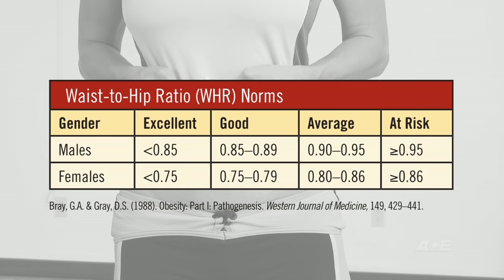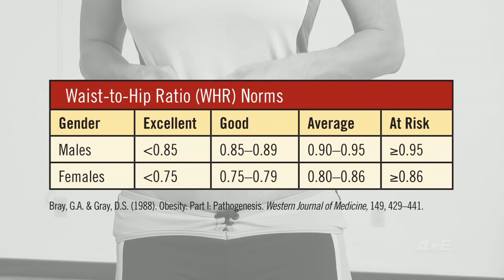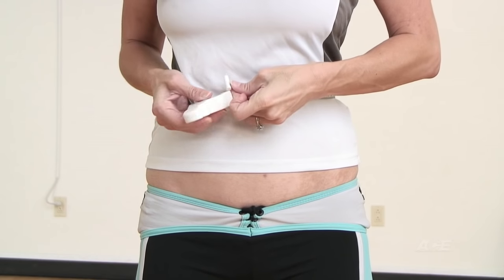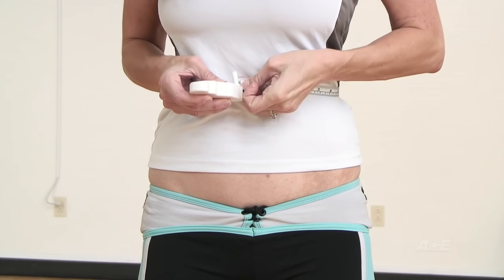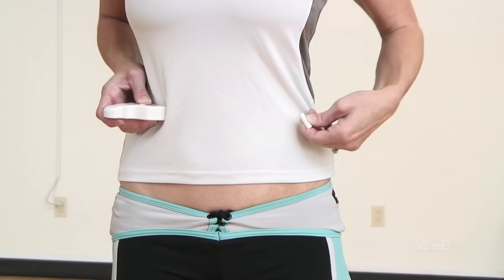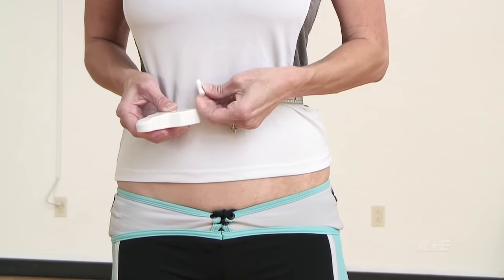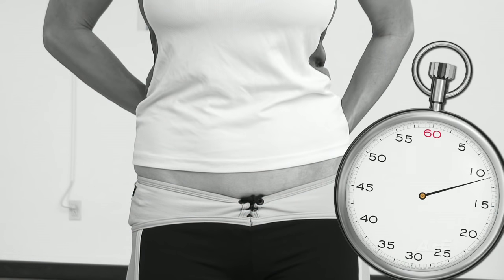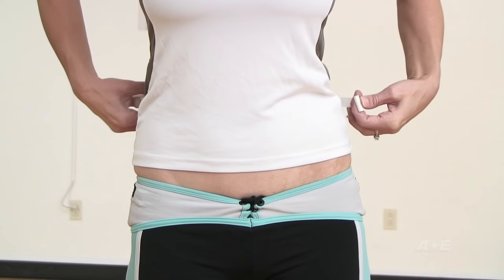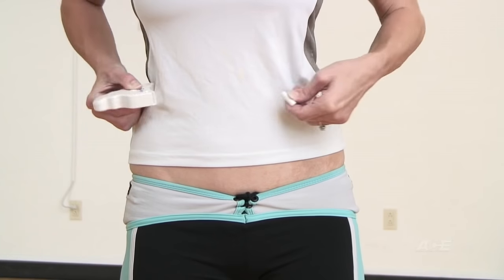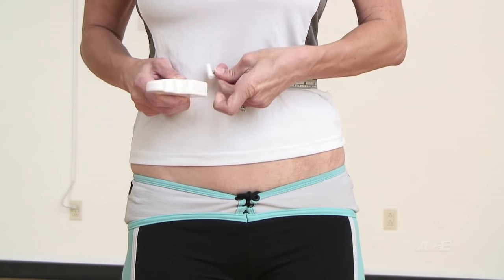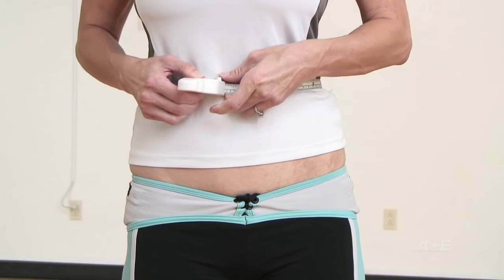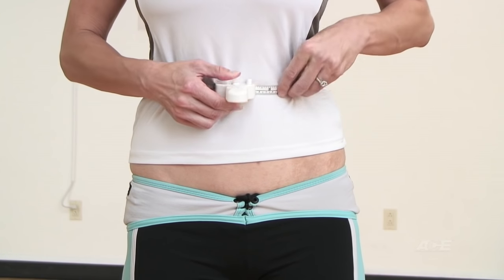For the waist circumference and the waist-to-hip ratio, for accuracy you want to ensure that you are completing the measurement at the same landmark each time. It is also helpful to complete multiple measurements at the same site, but ensure that you allow at least 20 to 30 seconds between repeat measurements to allow the skin and subcutaneous tissue to return to its normal state.